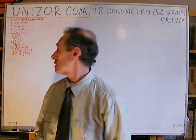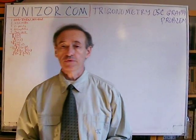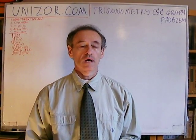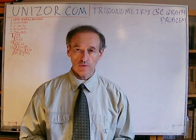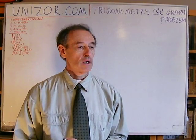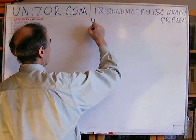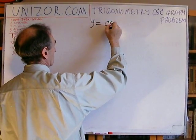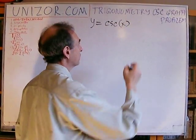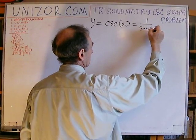I have something like eight different graphs which are basically variations of the same main original cosecant graph. By definition, the cosecant function is one over sine of x.